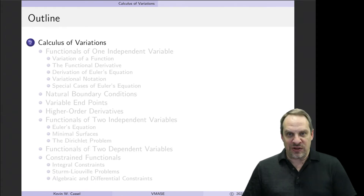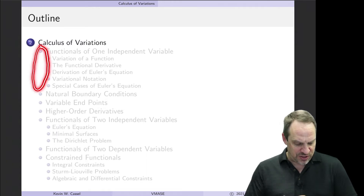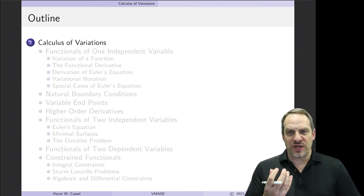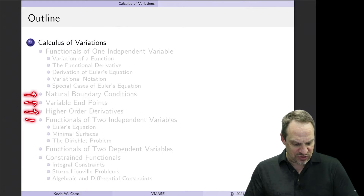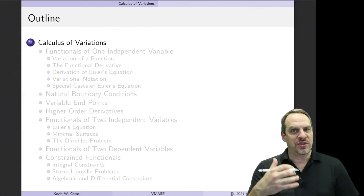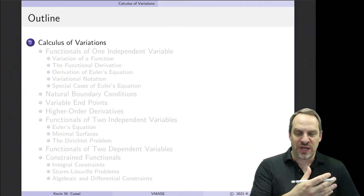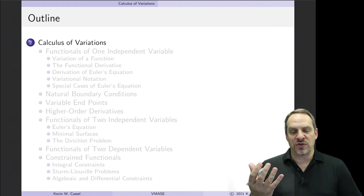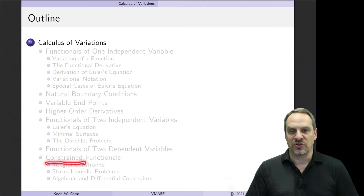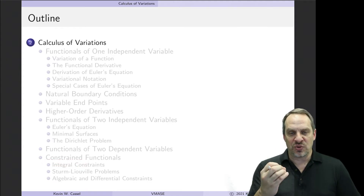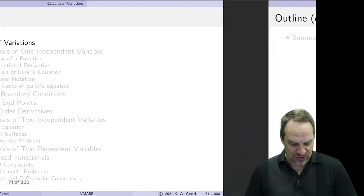You can see the outline here. The first section that we'll start on in this video is really the foundation for everything that we're going to do throughout chapter 2, and therefore the rest of the book. All of the rest of the sections in chapter 2 are going to be dealing with additional situations, special cases, or scenarios — such as incorporating constrained functionals. But the majority of the methodology is going to be contained in this very first section.